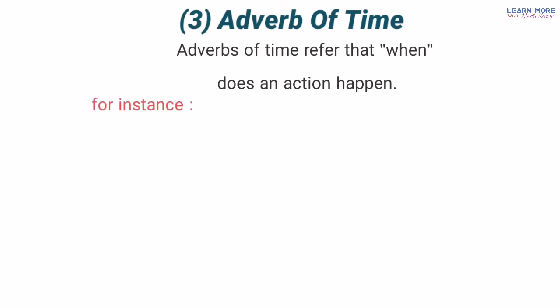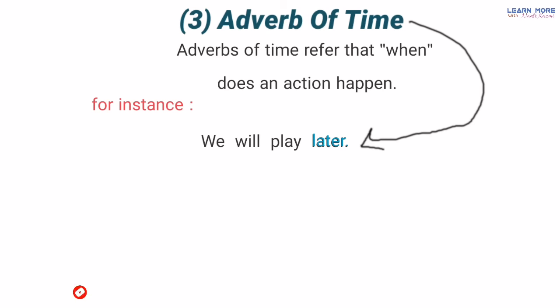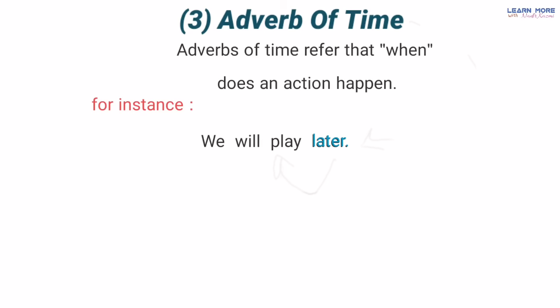For example: 'When will we play?' — hum kab khelenge? 'We will play later' — hum baad mein khelenge. Ab jo word 'later' hai yeh adverb of time hai kyunke yeh hamare is kaam ke waqt ke baare mein bata raha hai ke hum kaam kab karenge — khelne ka kab karenge? Later, baad mein.